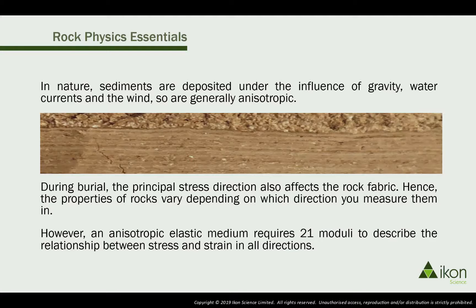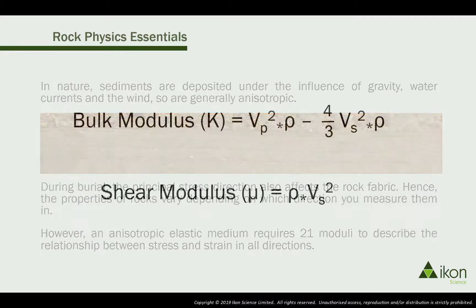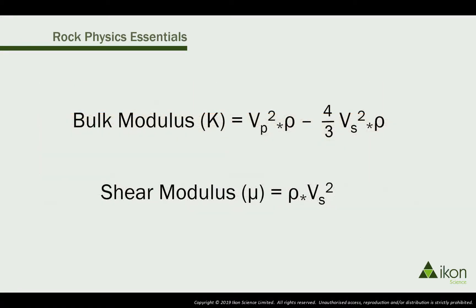Unfortunately, directly measuring the incompressibility or rigidity of a rock 3000 meters below the ground is pretty difficult. Thankfully, they can both be derived quite simply from VP, VS, and density logs, which are routinely acquired in wells.